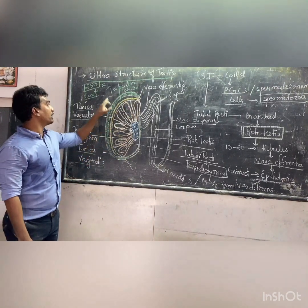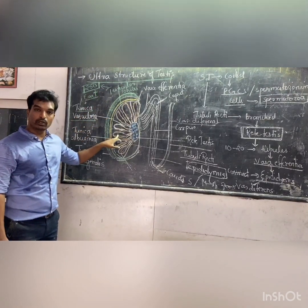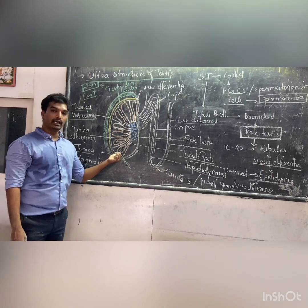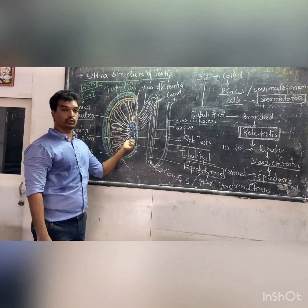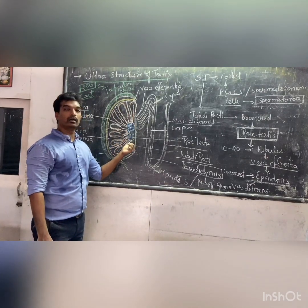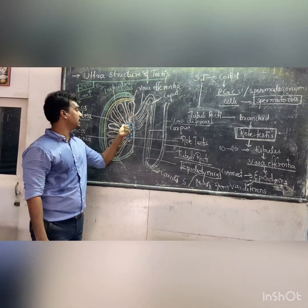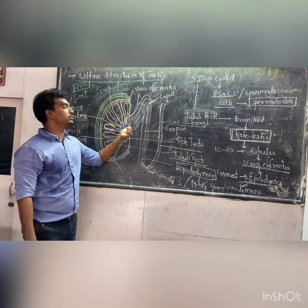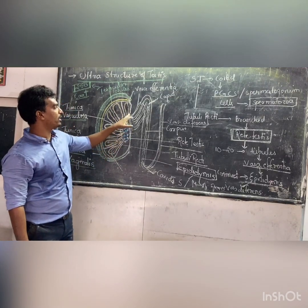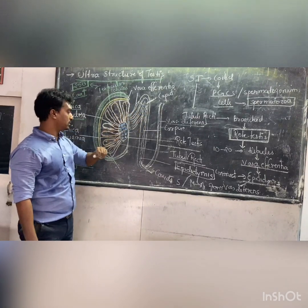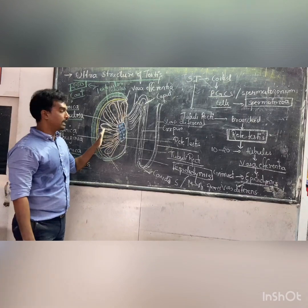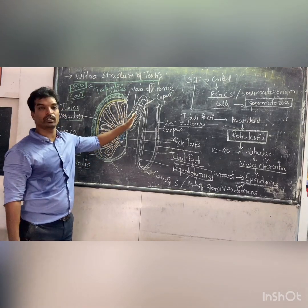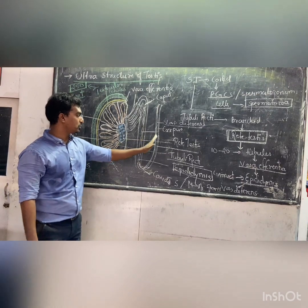To summarize the ultrastructure of the testes: the 250 testicular lobules are enclosed by tunica vasculosa, each lobule contains 1 to 3 seminiferous tubules. Sperms produced in seminiferous tubules travel through tubuli recti → rete testis → vasa efferentia (10–20 ductules) → epididymis → vas deferens.